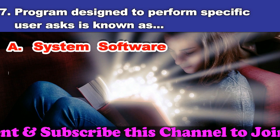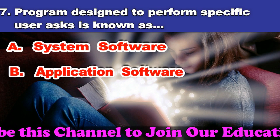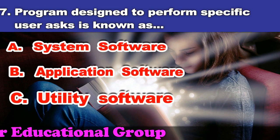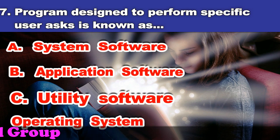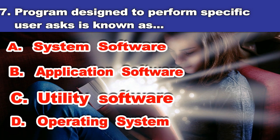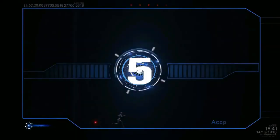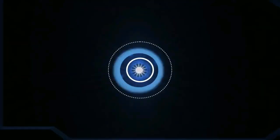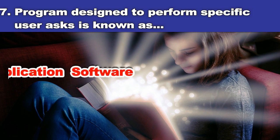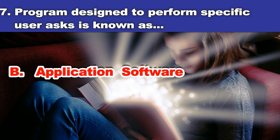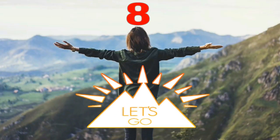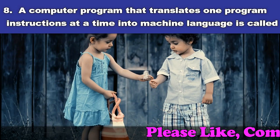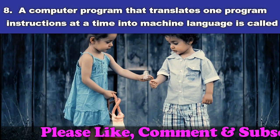Seventh question: A program designed to perform specific user tasks is known as. A. System software. B. Application software. C. Utility software. D. Operating system. And the answer is application software.